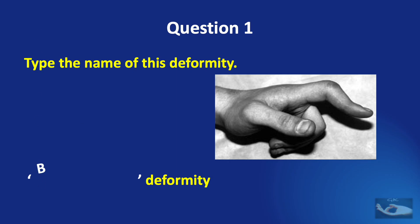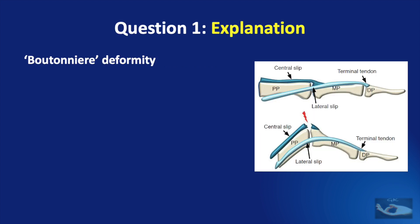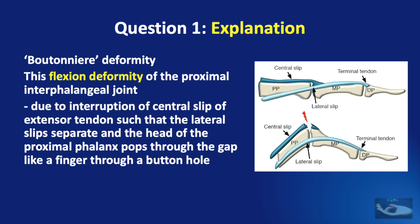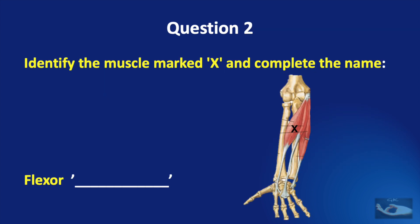And the correct answer is boutonnière deformity. The boutonnière deformity is a flexion deformity of the proximal interphalangeal joint due to interruption of the central slip of the extensor tendon, such that the lateral slips separate and the head of the proximal phalanx pops out on the dorsal aspect like through a buttonhole. The word boutonnière is derived from the French for buttonhole.